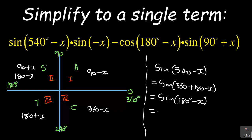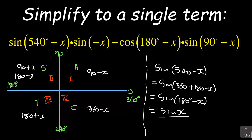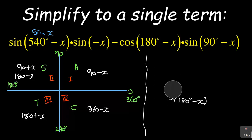When you simplify sine(180° - x), you ask yourself which quadrant it is in. You can see that it is in the second quadrant. In the second quadrant, sine is the one that is positive. So using the reduction rule, it simplifies to sine(x). So sine(540 - x) becomes sine(x).